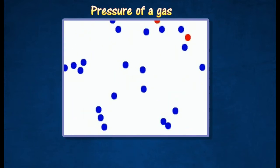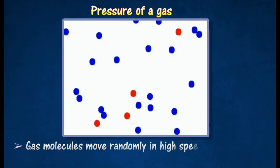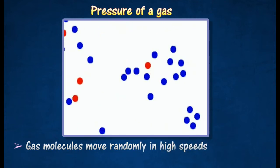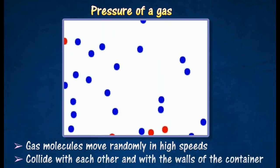A gas consists of a large number of molecules that are constantly moving at random with high speeds. These high-speed molecules are constantly colliding with each other and with the walls of the container.